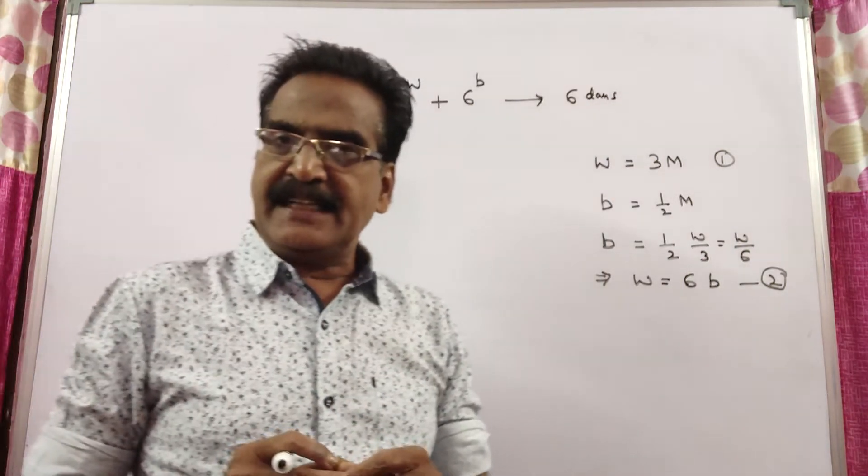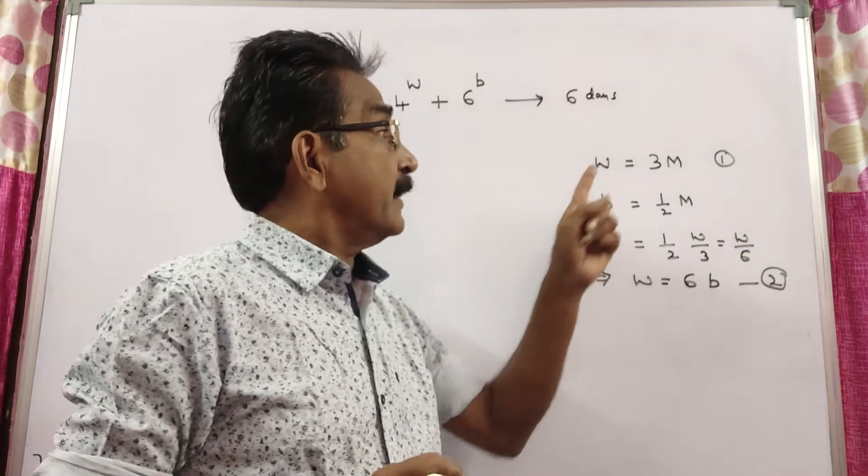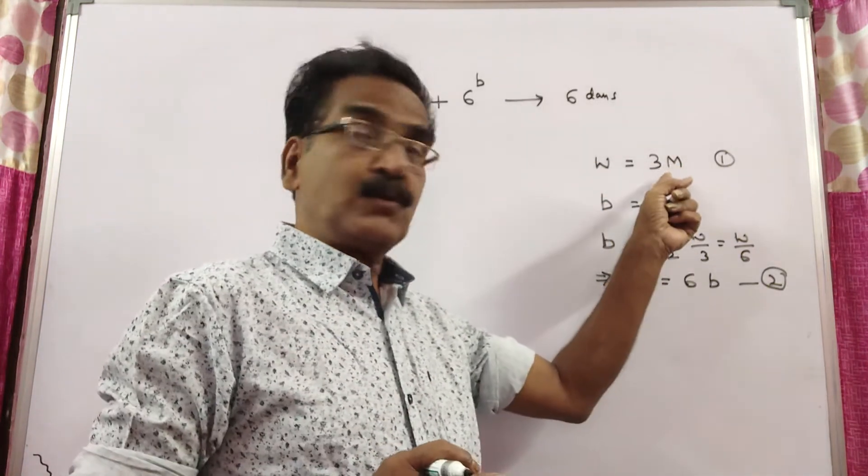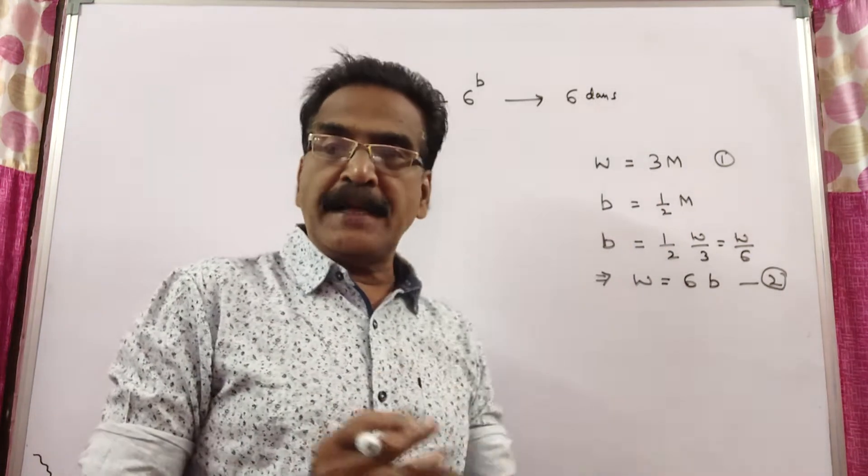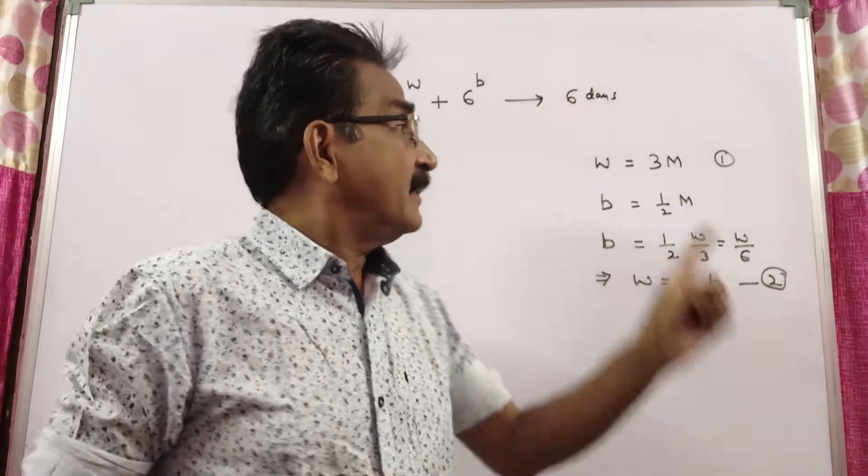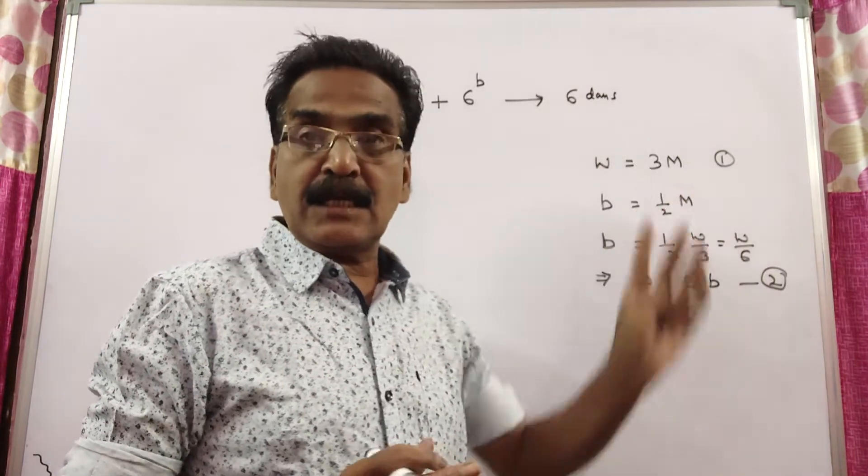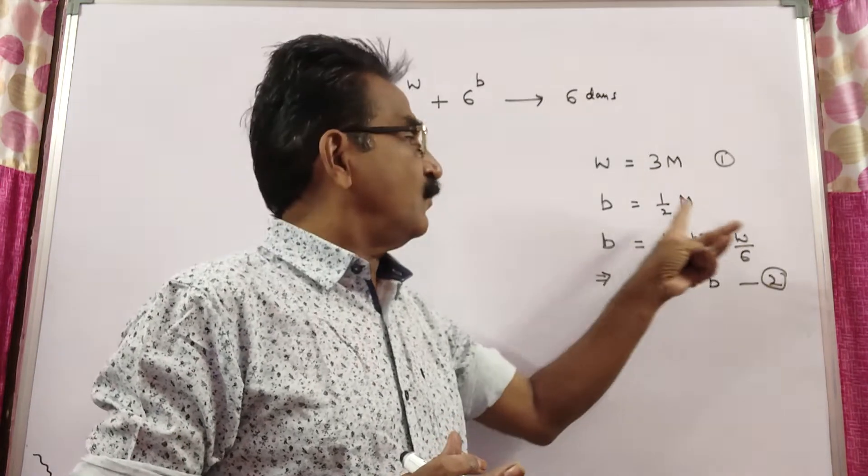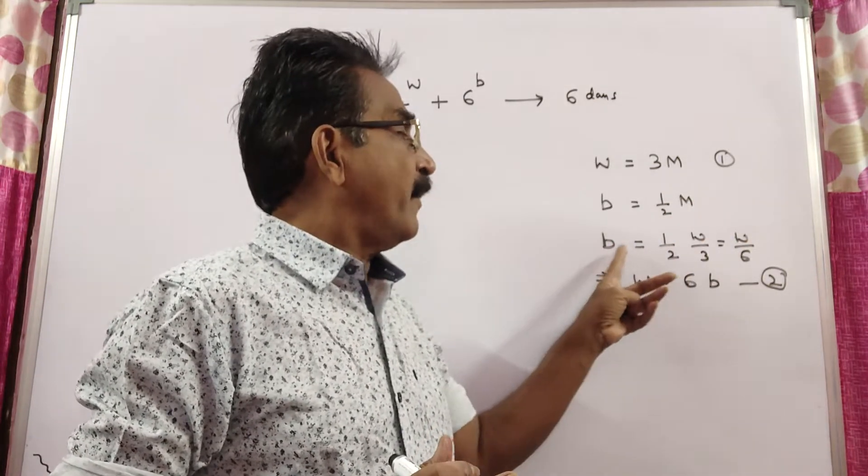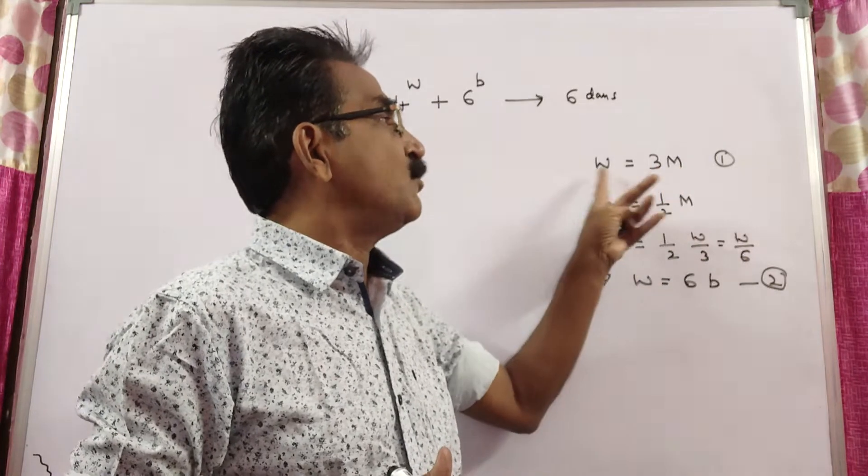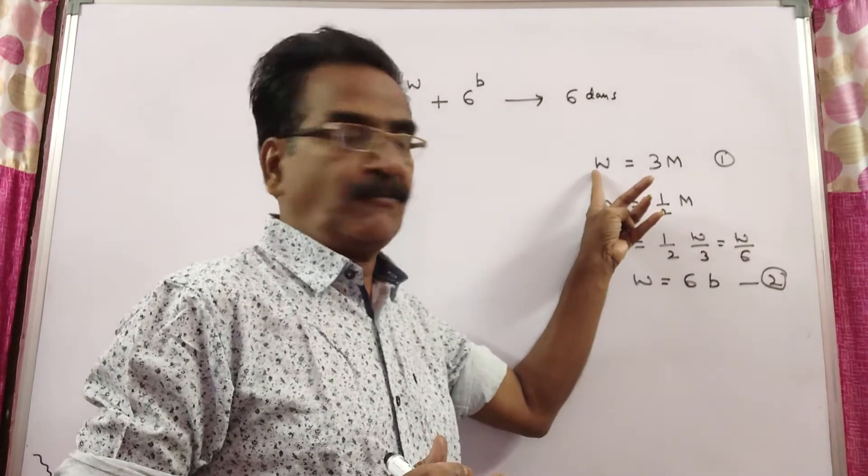And it is given that a woman can do triple as a man does and a boy does half of a man does. That is, woman is equal to 3 men and boy is equal to half of the man. Boy is equal to half of man is equal to w by 3, woman by 3, one third of woman.